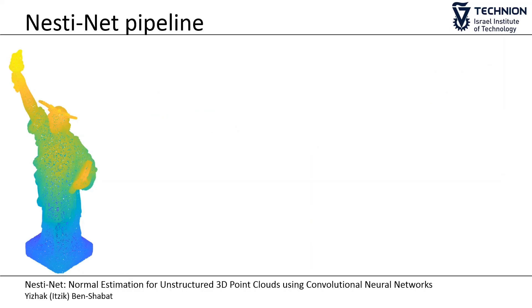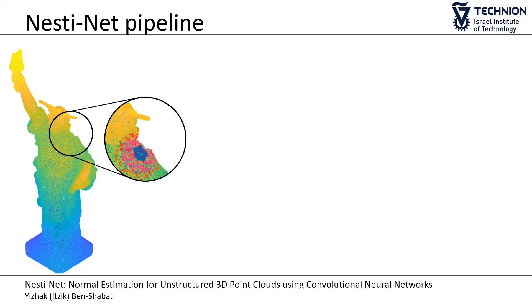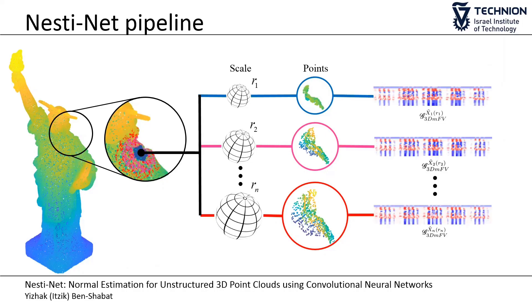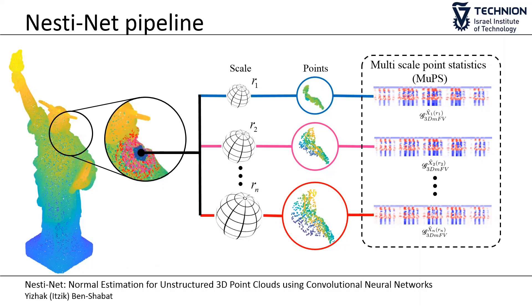Given a point cloud, we first extract several point subsets around each point for a given set of radii, called scales. Then, we convert each scale subset into its 3D MFV representation. We name this new representation Multi-Scale Point Statistics, or MOOPS for short.